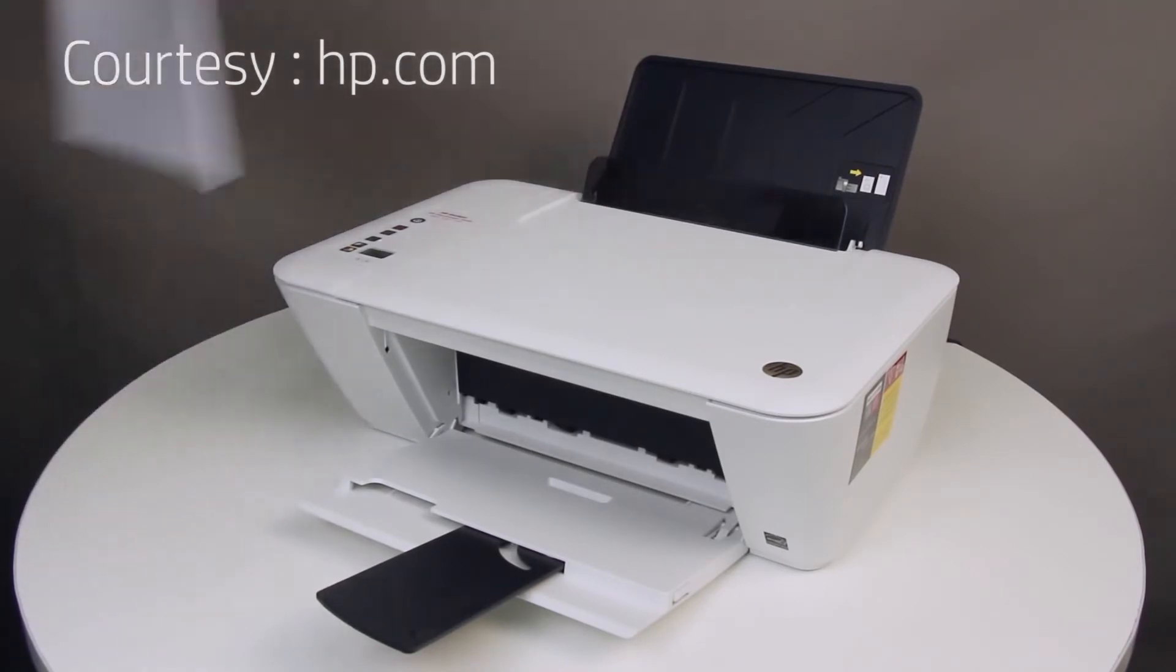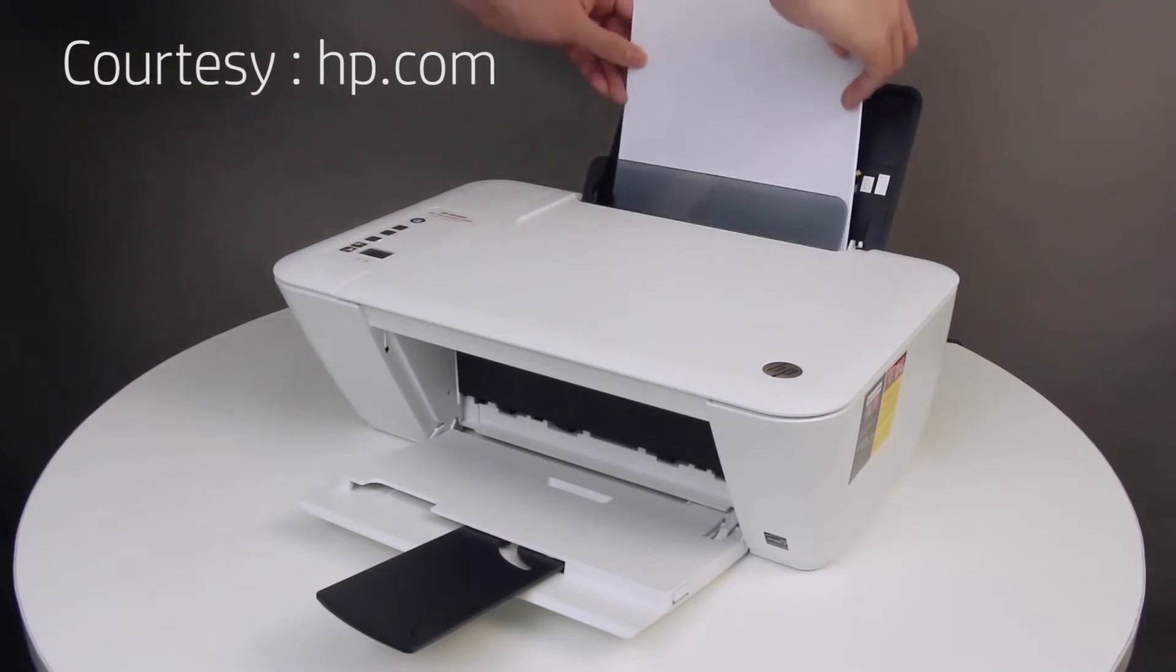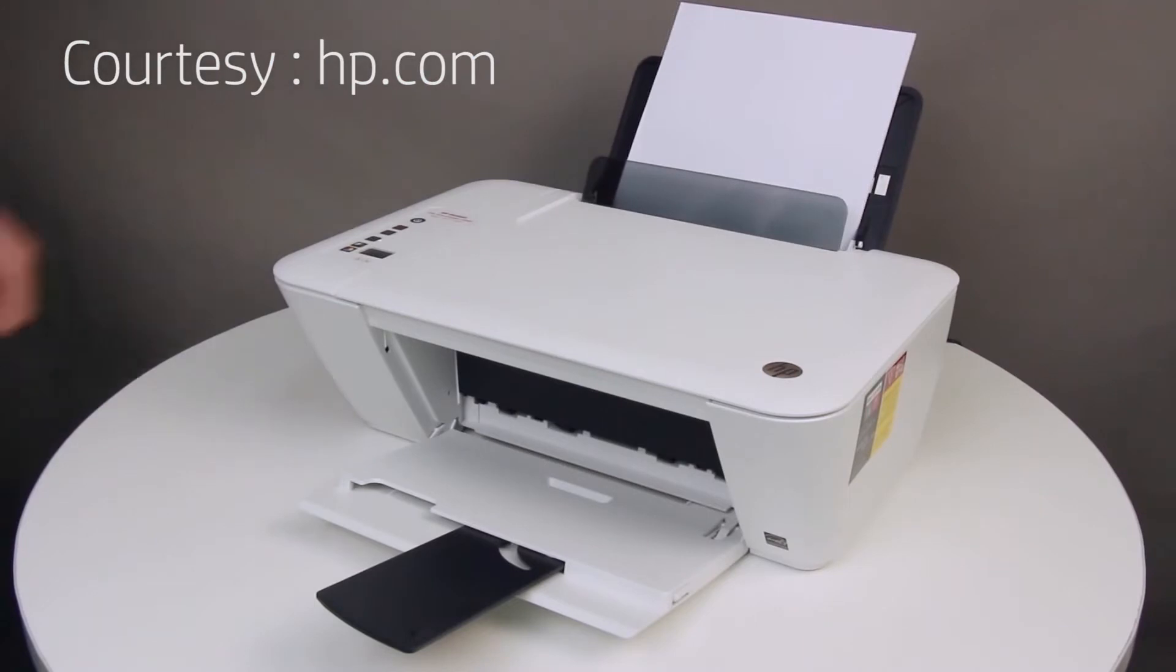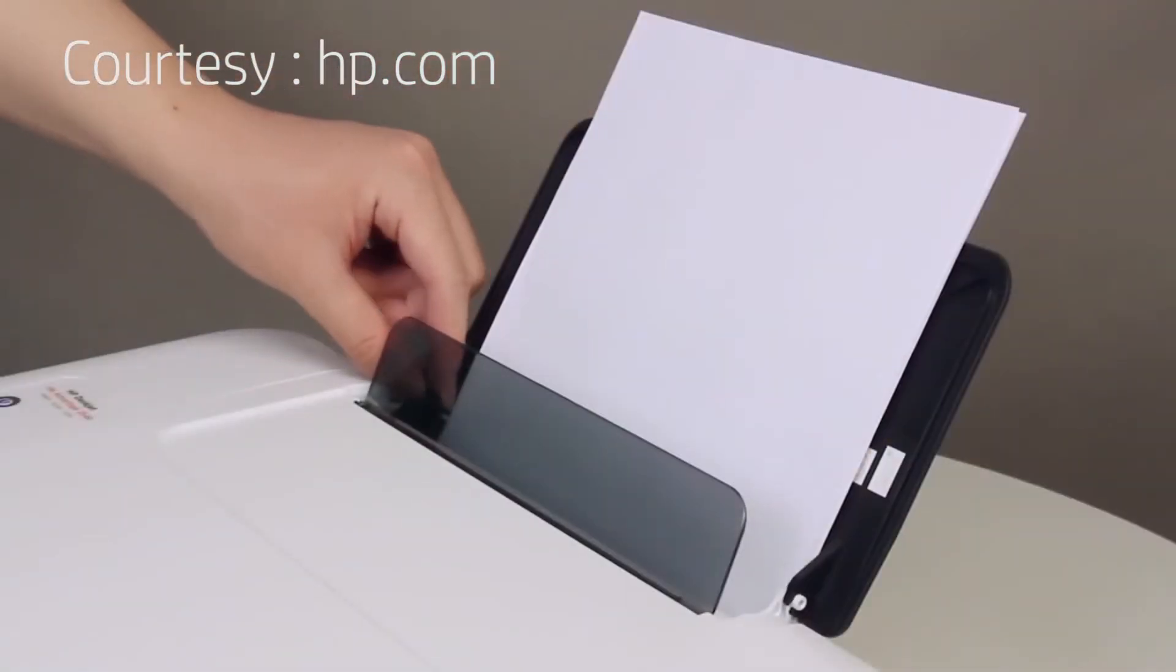Load a stack of plain white paper into the input tray with the short edge forward and the print side up. Slide the paper guide inward until it stops at the edge of the paper. Do not push the guide in so tightly that it starts to bend the paper.